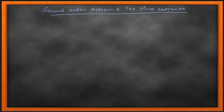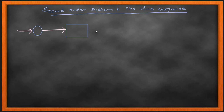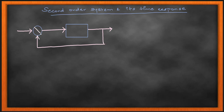So to begin, what is the second order system? A second order system is a system whose transfer function has in its denominator a quadratic expression, a quadratic polynomial with s-squared terms. That is your second order system. And what is the use of your second order system? You can use second order systems to get oscillatory and sinusoidal response.